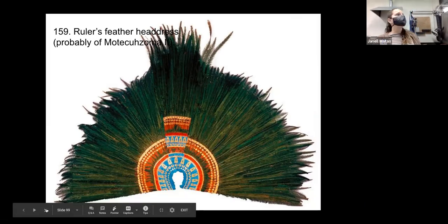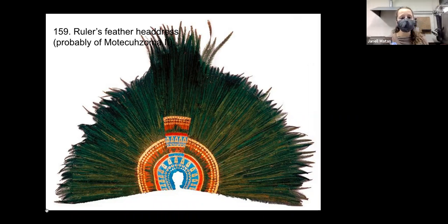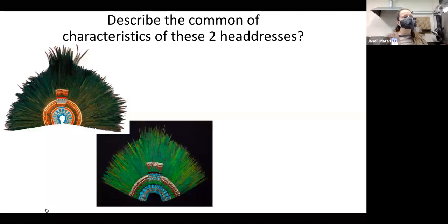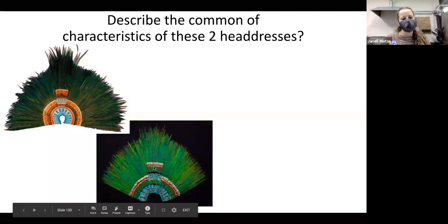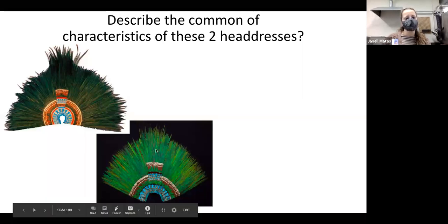The last piece we have is a ruler feather headdress — this is probably Montezuma II's headdress. Here's another example of an Aztec headdress. I want to show you a couple of them so you can identify some of the common characteristics. What are some characteristics you see between these two feathered headdresses?